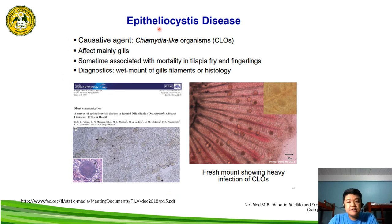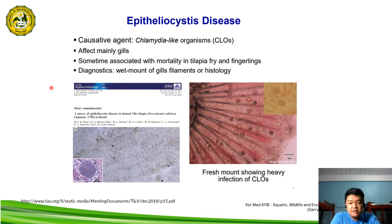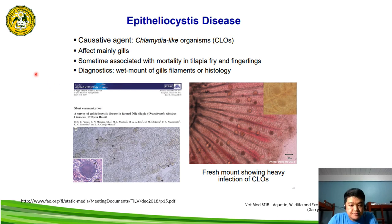Another bacterial disease of farm tilapia is epitheliocystis disease, caused by a chlamydia-like organism (CLO). This disease mainly affects the gills of infected fish and is sometimes associated with mortality in tilapia fry and fingerlings. Diagnostics include wet mount of the gill filaments or histology. Here is a fresh mount showing heavy infection of CLO in the gills of the fish.